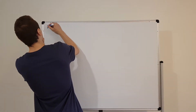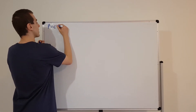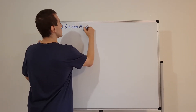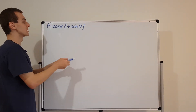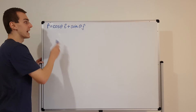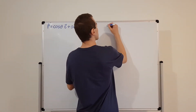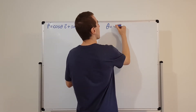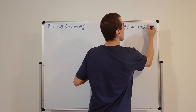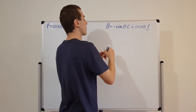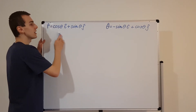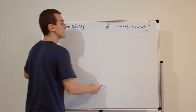r hat is equal to cosine theta times i hat plus sine theta times j hat. This is just breaking up that angle into its horizontal and vertical components. So this is the radial unit vector. The tangential unit vector, theta hat, is equal to minus sine theta times i hat plus cosine theta times j hat. These are the horizontal and vertical components respectively — you can see what happens when you rotate the vector by 90 degrees: cosine turns to minus sine and sine turns to cosine, which is the same as differentiating.